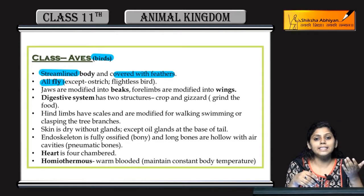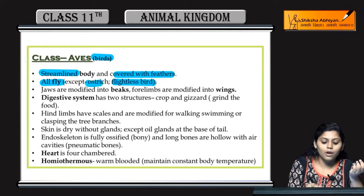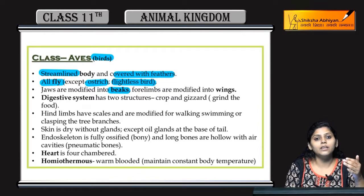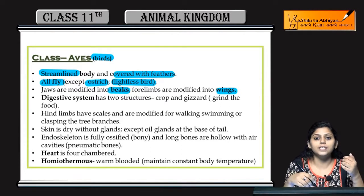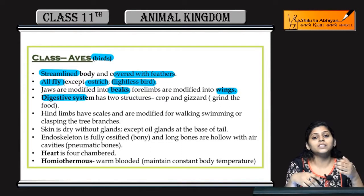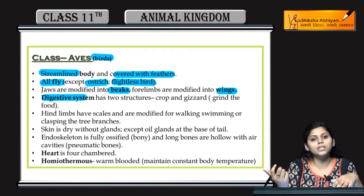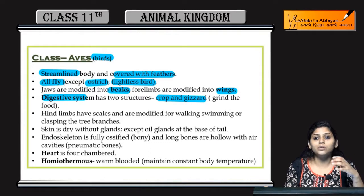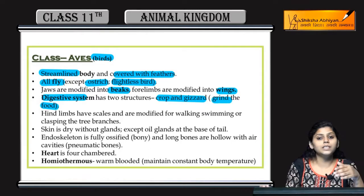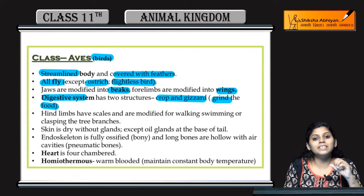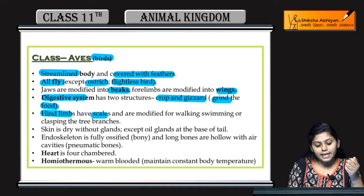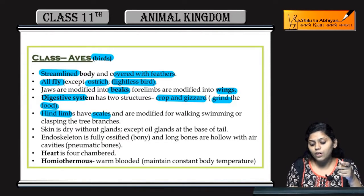All birds can fly except flightless birds, which is ostrich. Their jaws are modified into beaks and forelimbs are modified into wings. Digestive system ke paas do structures hote hai different from other animals — that is crop and gizzard, jo help karte hai to grind the food. Inke paas beaks hoti hai jo modified hai to woh grinding nahi kar pati, isililye gizzard and crop woh ise grind karti hai. Hind limbs ke paas scales hote hai and those are modified for walking.